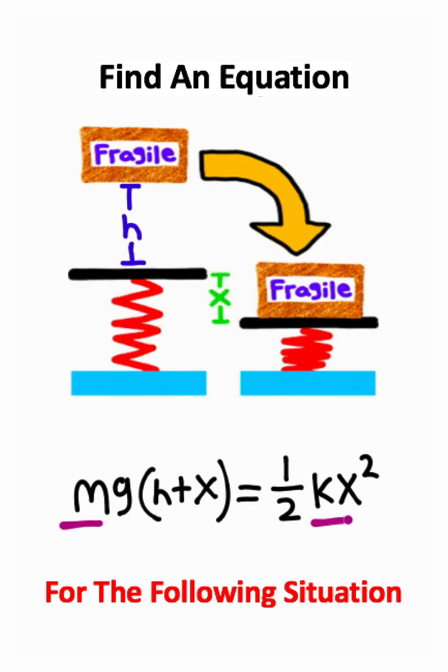So assuming that you're given your mass and the spring constant, height H will be given to us and we know the gravity constant of Earth, all you would need to do is use algebra to solve for the missing variable X. So this is the equation that you would need.